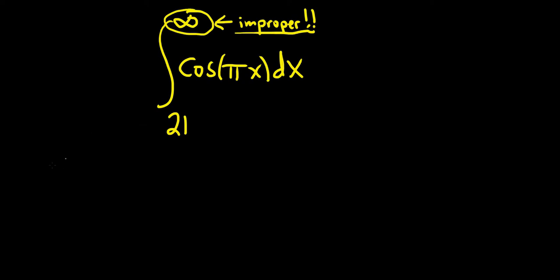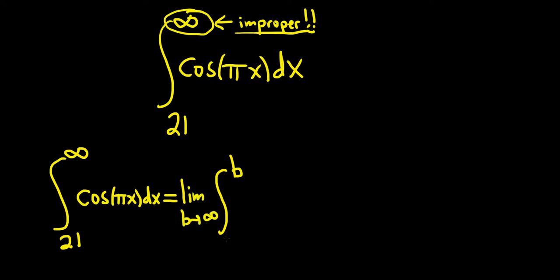Let's start by rewriting our integral. We have the integral from 21 to infinity of cosine of pi x dx. Because we have infinity, we replace it with a variable—I like to use the letter b—and then take the limit as b approaches infinity of the integral from 21 to b of cosine of pi x dx.